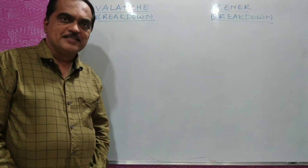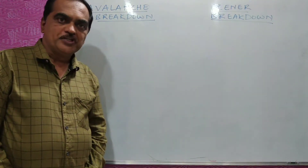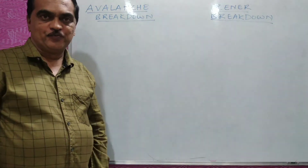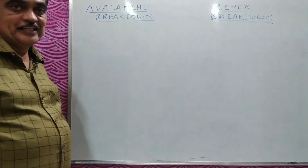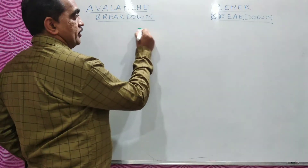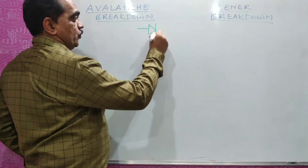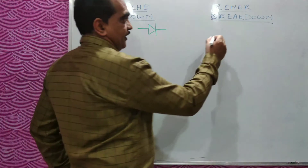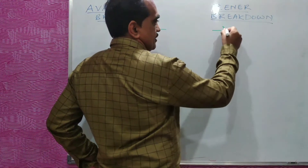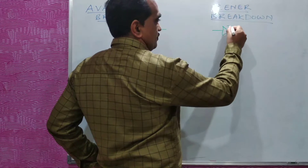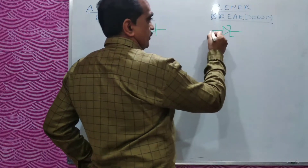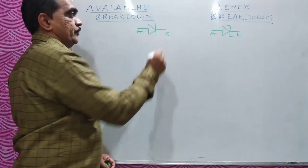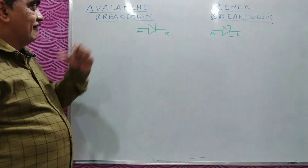Now students, we will see what is the difference between avalanche breakdown and zener breakdown. Avalanche breakdown takes place in a normal PN junction diode, which is symbolically shown like this. And zener breakdown takes place in a zener diode, which is symbolically shown like this. This is anode and cathode.